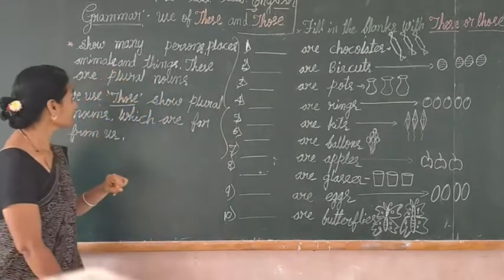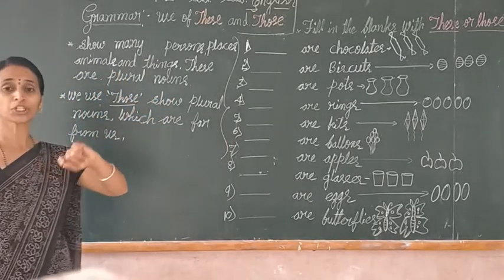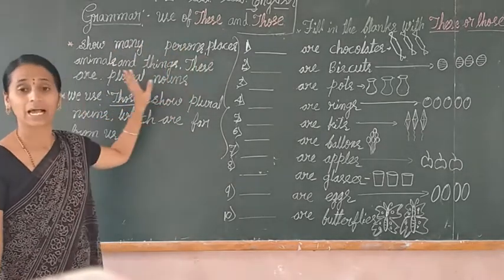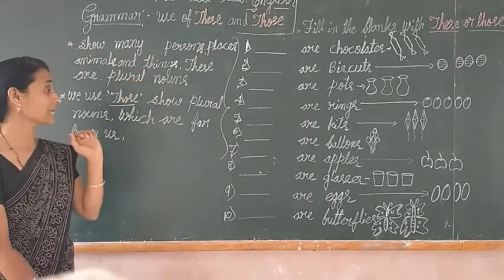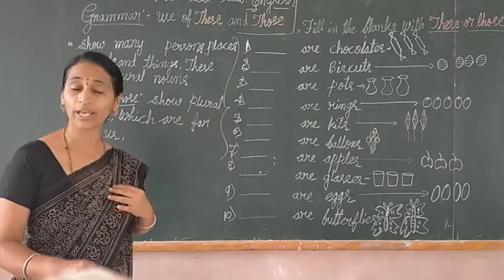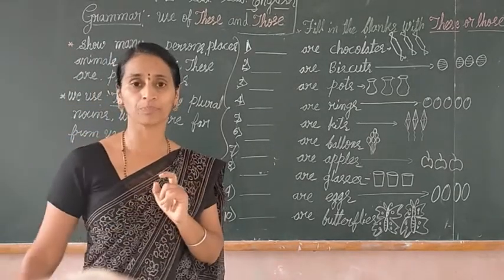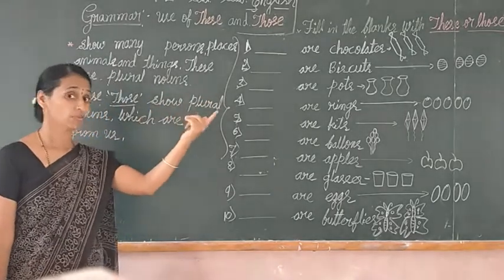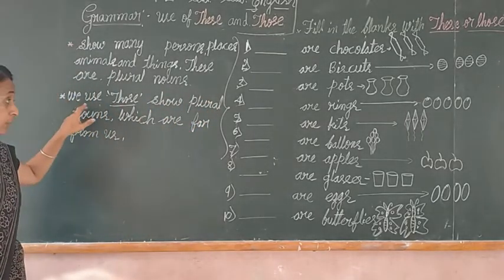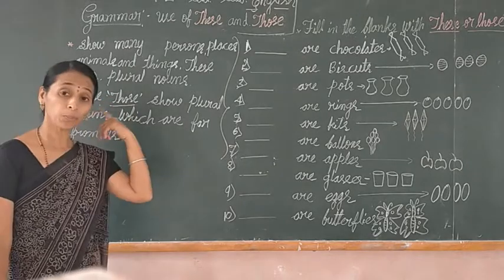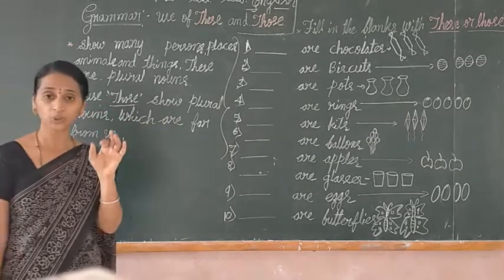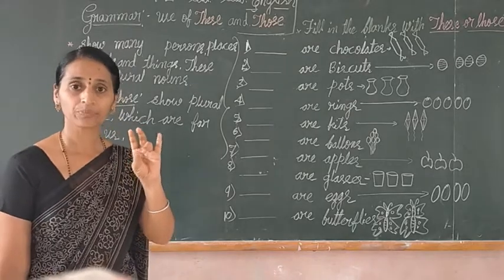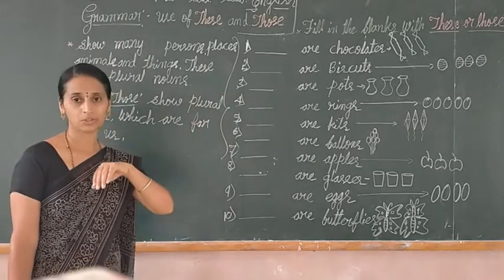Students, 'these' shows many persons, places, animals, and things. These are plural nouns, so we use 'these' in plural form. 'Those' means far away — we use 'those' to show plural nouns, persons, places, animals, and things that are far away from us.